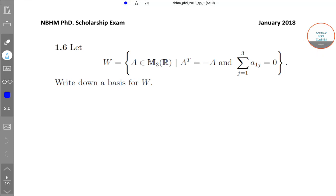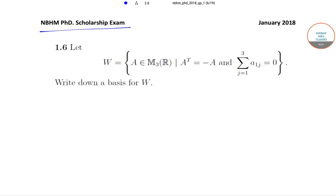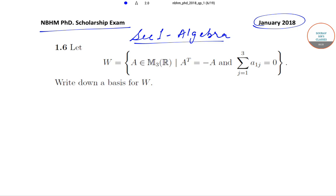Hello students, welcome to Subsist Classes. Today we will be solving the NBHM PhD scholarship exam questions from the January 2018 paper. We'll be solving the questions from the section one algebra portion of the paper. Let's start off with question six from section one.